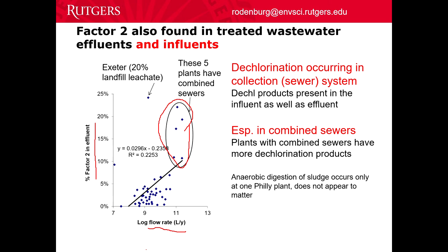It turns out that many of these places had measured PCBs in their influent as well as their effluent, and the dechlorination products were in the influent. So this wasn't happening in the plant itself — it was happening upstream, which means this must be happening in the sewer system. Sewers are very anaerobic, they harbor lots of bacteria, they've got plenty of food for the bacteria to eat. What they lack is oxygen. So these chlorinated compounds are acting as the electron acceptors in the place of oxygen for all the bacteria in the sewer. That was just an example of how you can use data mining to show that dechlorination of PCBs is actually occurring.